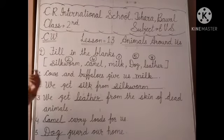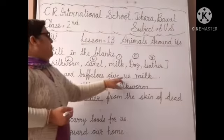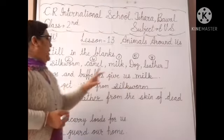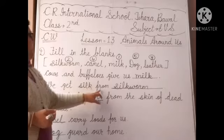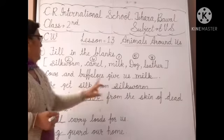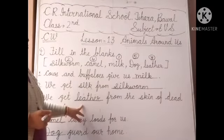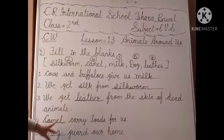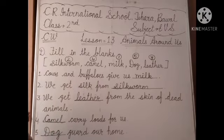One more revise. Cows and buffaloes give us milk. We get silk from silkworms. We get leather from the skin of dead animals. Camels carry loads for us. Dogs guard our home.